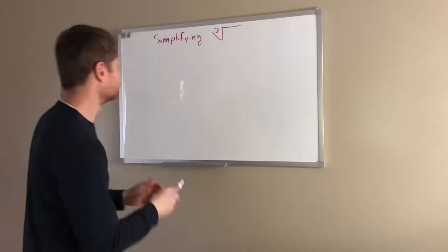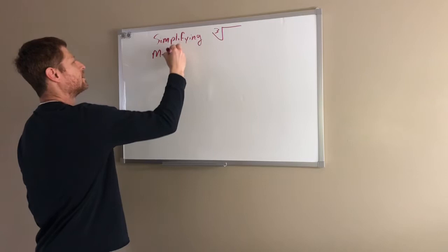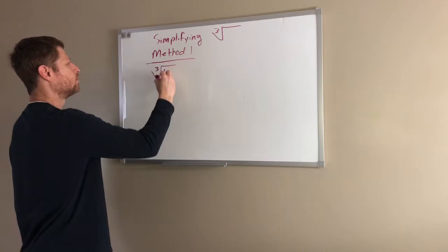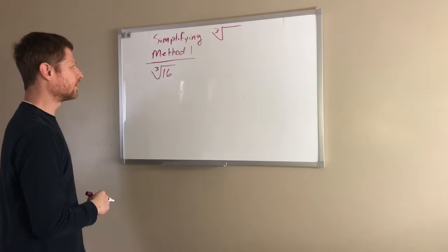So we're going to use the same methods that we talked about yesterday. Method 1, remember, was trying to find the largest perfect square that was in a number. Well, since we're doing cube roots, we're looking for the largest perfect cube that goes into 16.